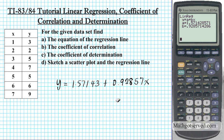So the equation of the regression line is Y equals A plus BX. In this calculator, A is 1.57142 and B is 0.92857. I plug in these two values into this equation to generate the regression line equation. This is the answer for part A — the equation of the regression line.